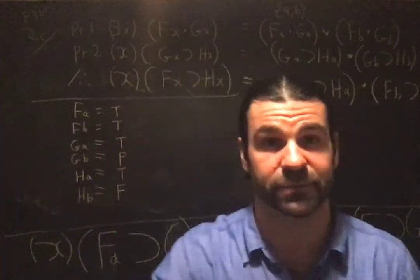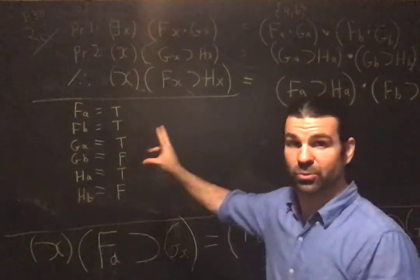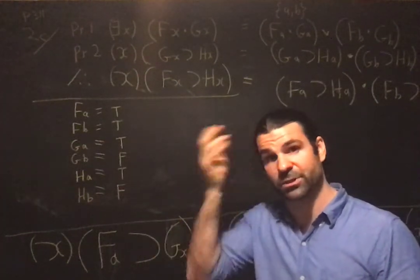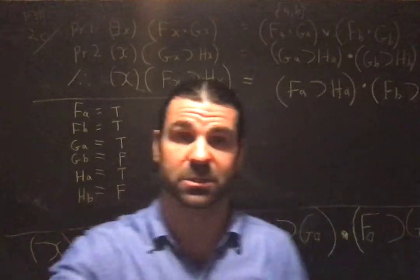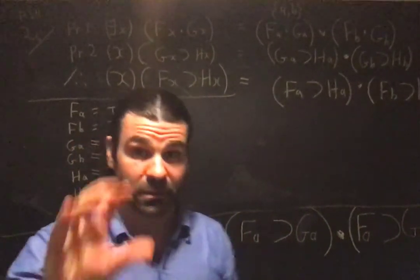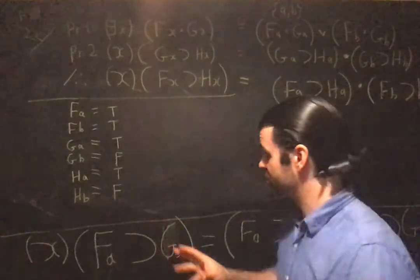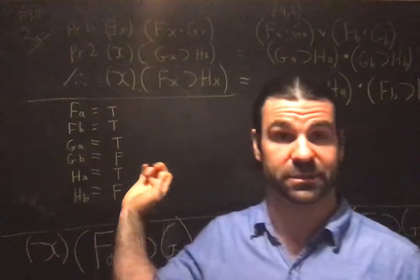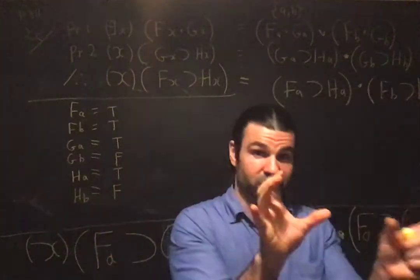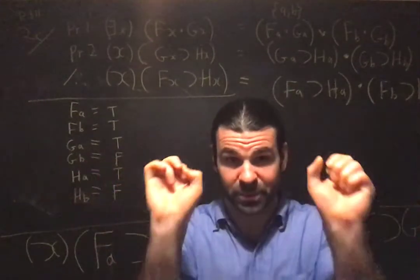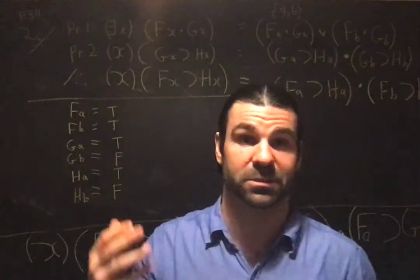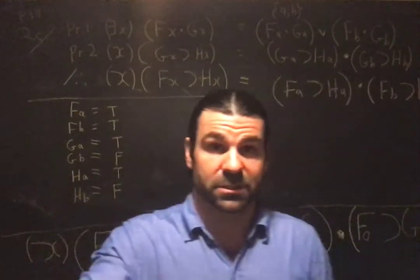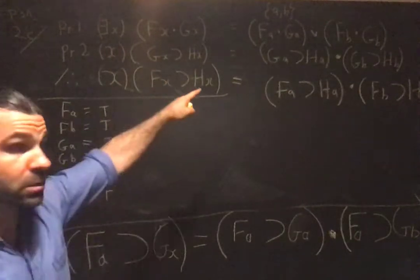That follows from the definition of validity in quantified logic. An argument in quantified logic is only valid if there are no counter examples in any domain. So specify the domain, two individuals. Next, rewrite the quantifier statements to state what they mean in this domain. Universal statements translate into conjunctions. Existential statements translate into disjunctions.